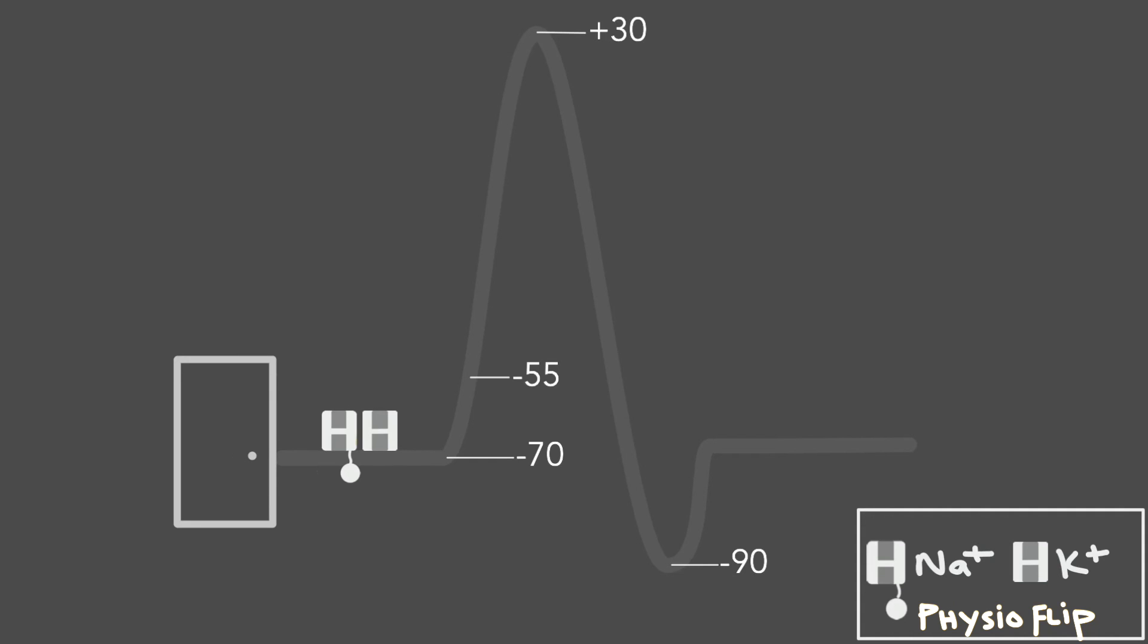Well, the way to pull this sodium channel open, open the activation gate and start an action potential, is by making the inside of the cell positive enough, to about minus 55 millivolts. If we reach this threshold value, we can see that the sodium activation gate opens, allowing sodium to enter the cell, depolarizing the membrane, making it more positive.